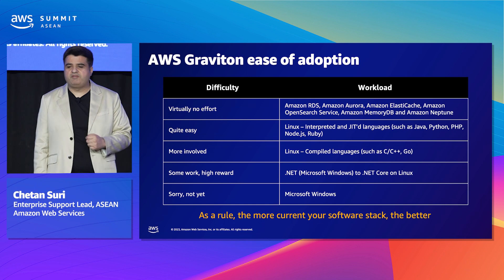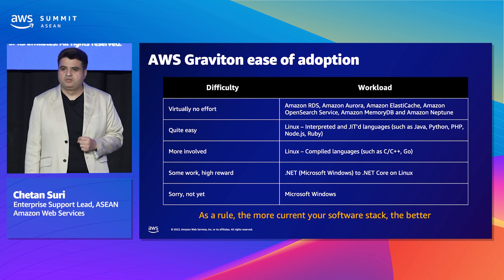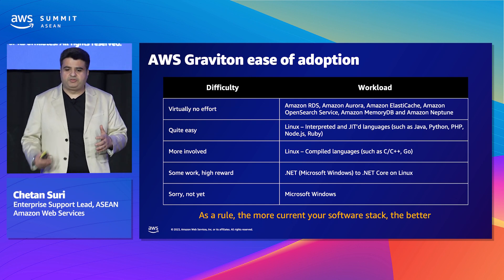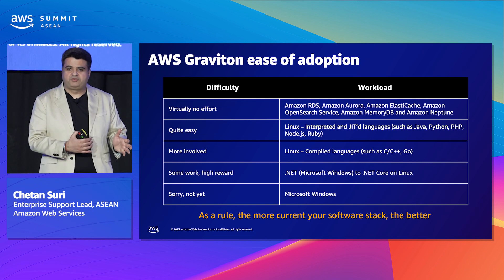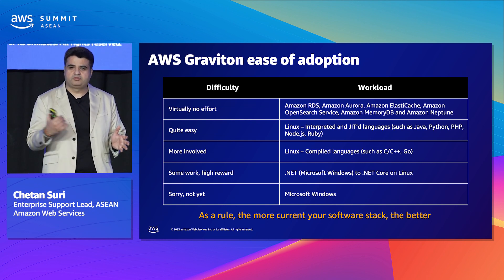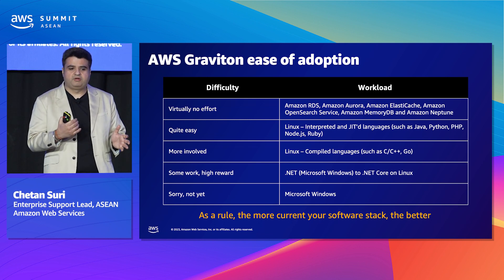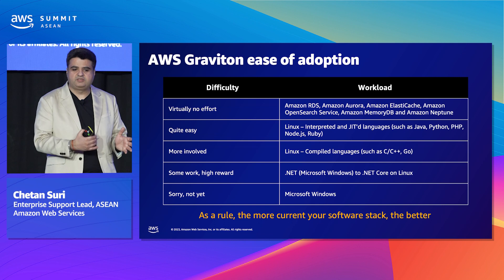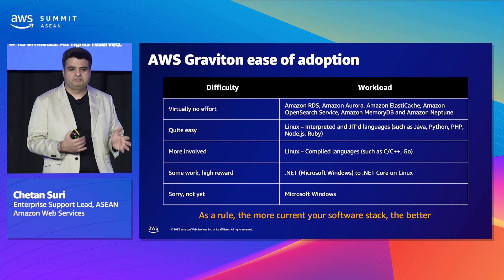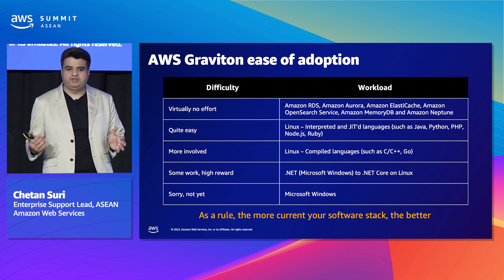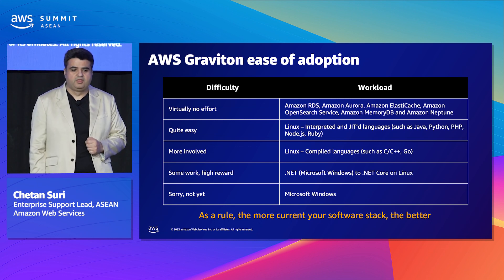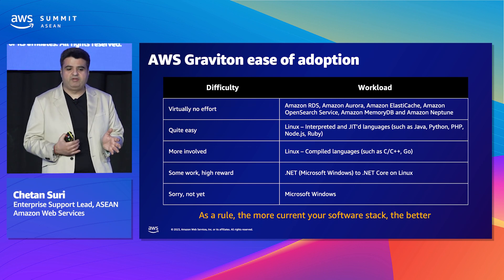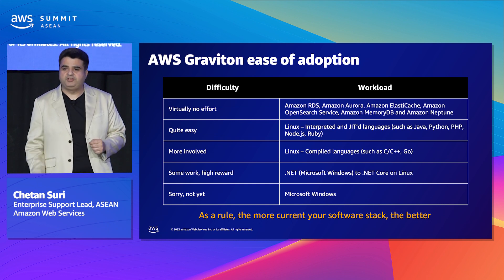Regarding the ease of adoption: if you're using AWS managed services, there are virtually no efforts required to move to Graviton. Applications in high-level programming languages such as Python, Node, Ruby, Java, and PHP typically require only a redeployment, while applications written in lower-level languages such as C, C++, Rust, or Go require a recompilation.